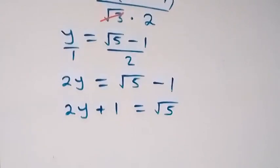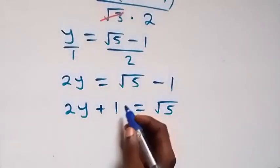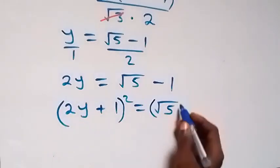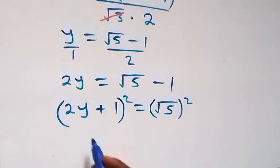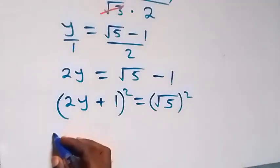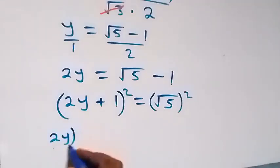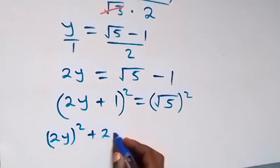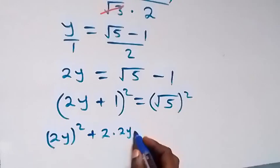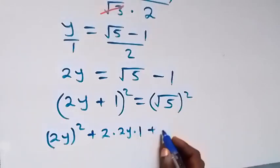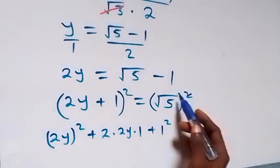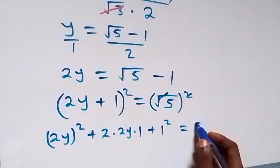From here, we square both sides. Squaring the left side using the expansion of (a+b)², we have (2y)² + 2×2y×1 + 1² equals, on the right side, the square cancels the square root, giving 5.